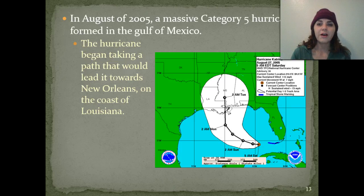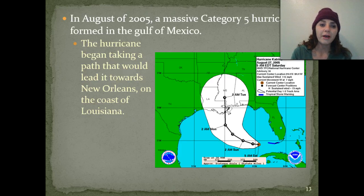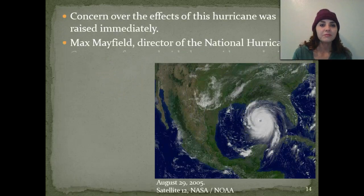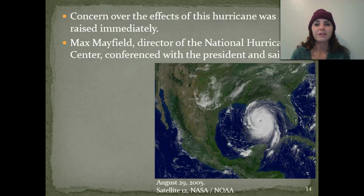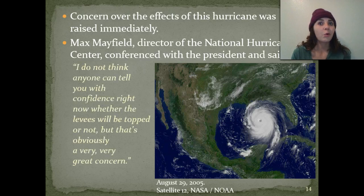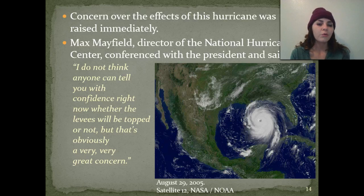In August of 2005, a massive Category 5 hurricane formed in the Gulf of Mexico and began taking a path directly towards New Orleans on the coast of Louisiana. There was huge concern about the effects this hurricane would have. Max Mayfield, director of the National Hurricane Center, conferenced with the President and said: 'I do not think that anyone can tell you with confidence right now whether the levees will be toppled or not, but that's obviously a very, very great concern.'